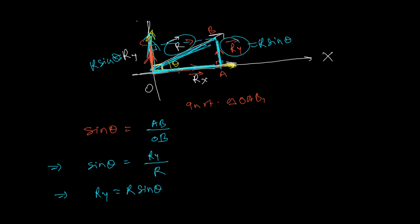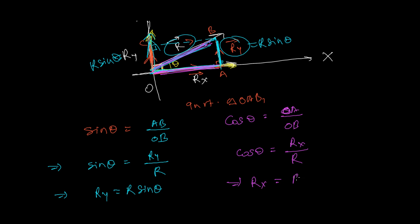Now let's find the x-component. The x-component is represented by the base OA of the right-angled triangle, and OB is the hypotenuse. We take cosine of angle theta because cosine equals base over hypotenuse — that is OA over OB. OA represents the x-component RX, and OB represents the original vector R. So the x-component RX = R cos theta. We have now split one vector into two components: R cos theta along the x-axis and R sin theta along the y-axis.